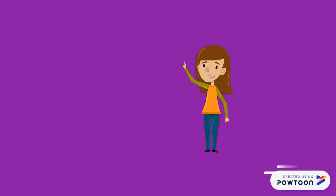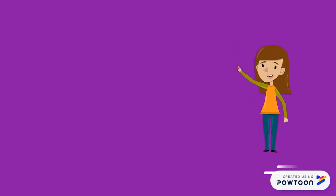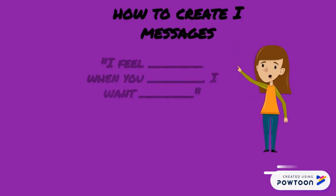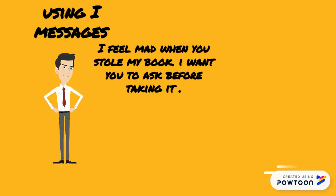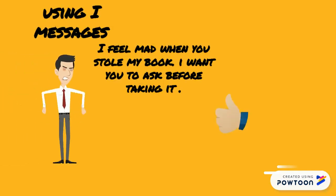How to create an I Message. First, you start with the formula: I feel blank when you blank. Second, you explain — for example: "I feel mad when you stole my book. I want you to ask before taking it."